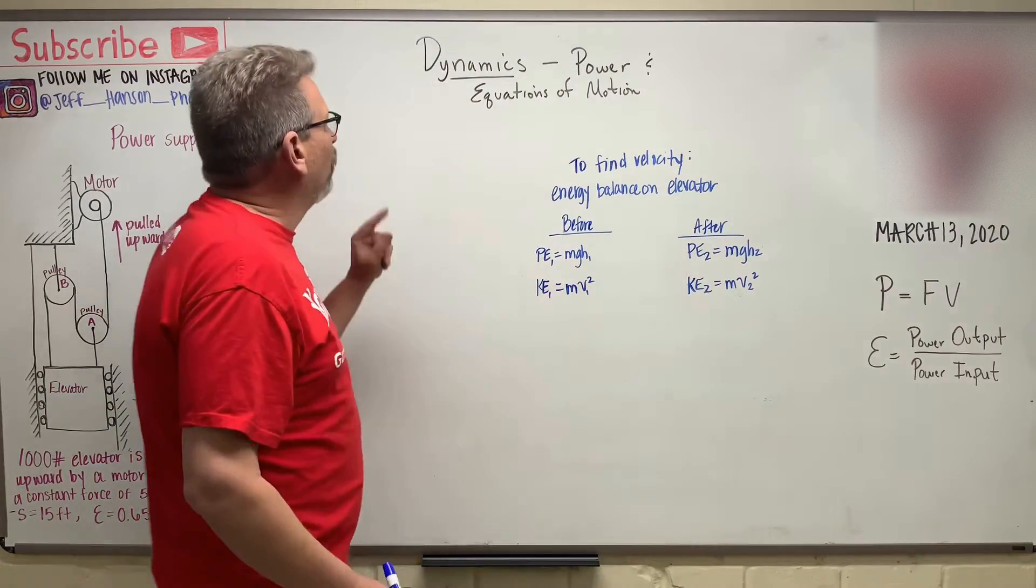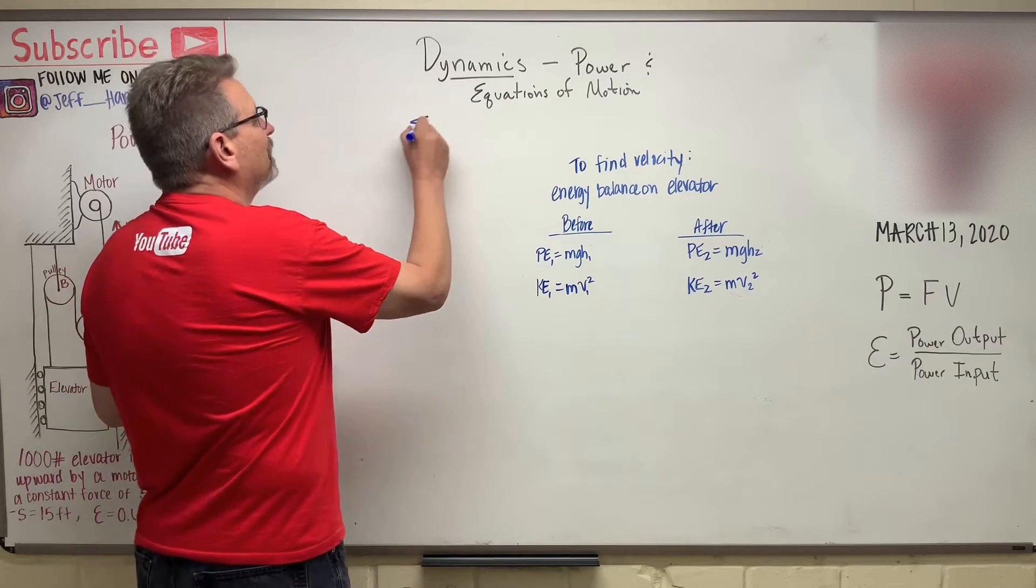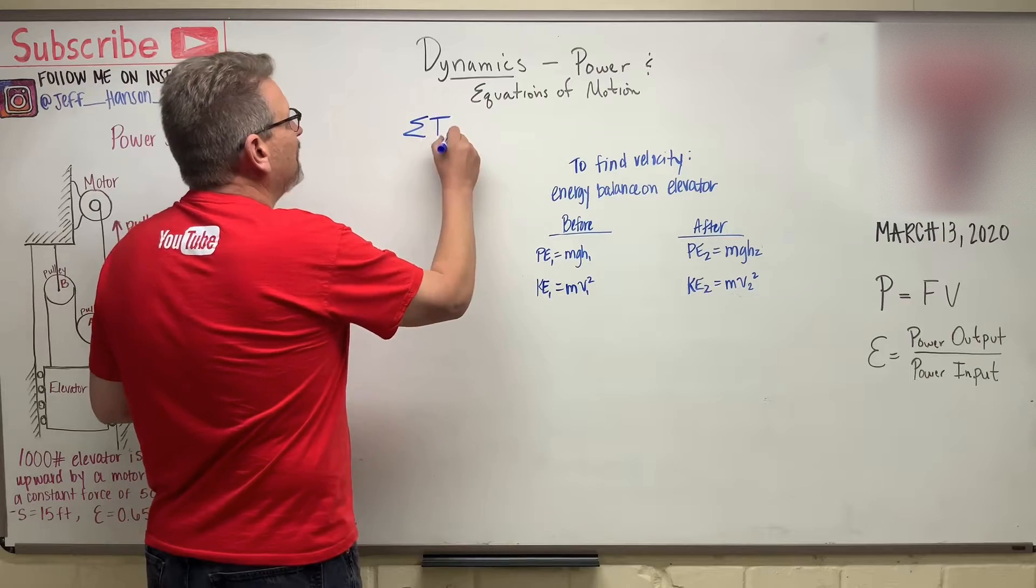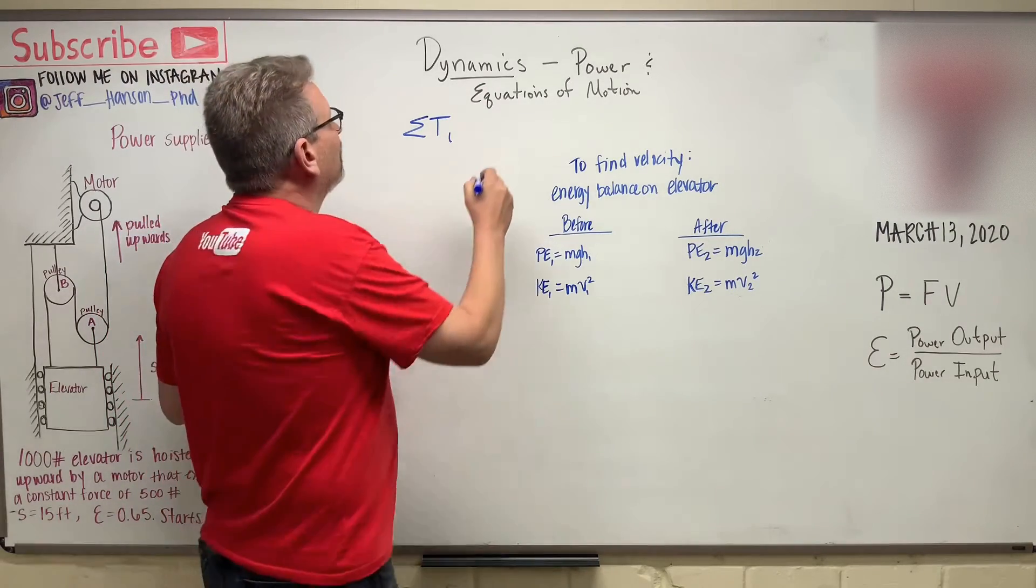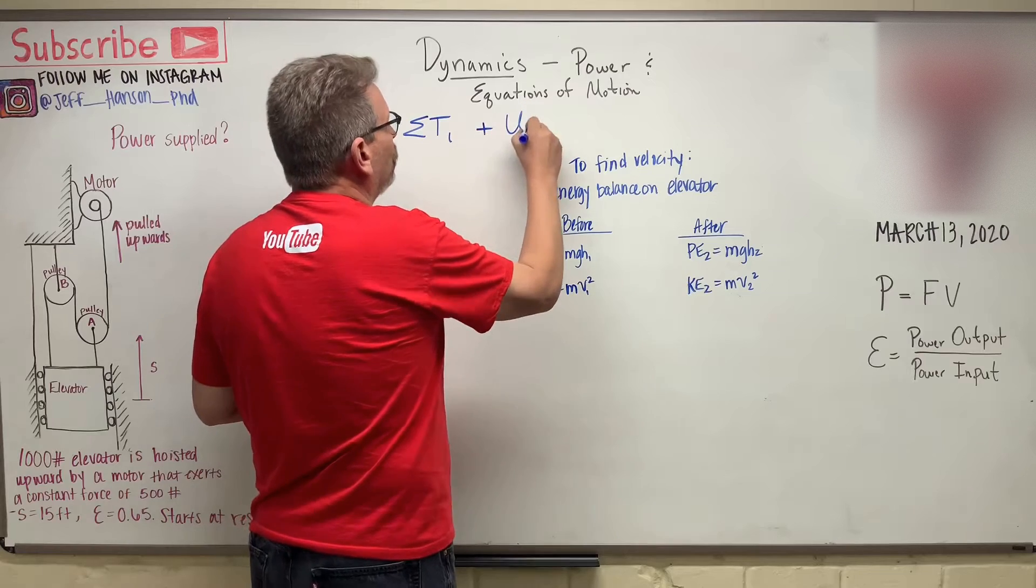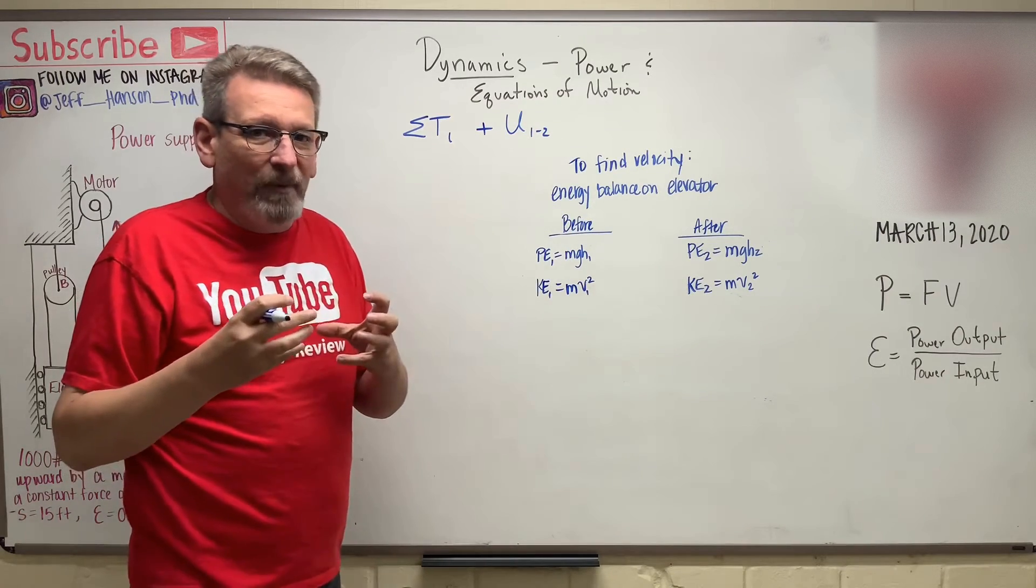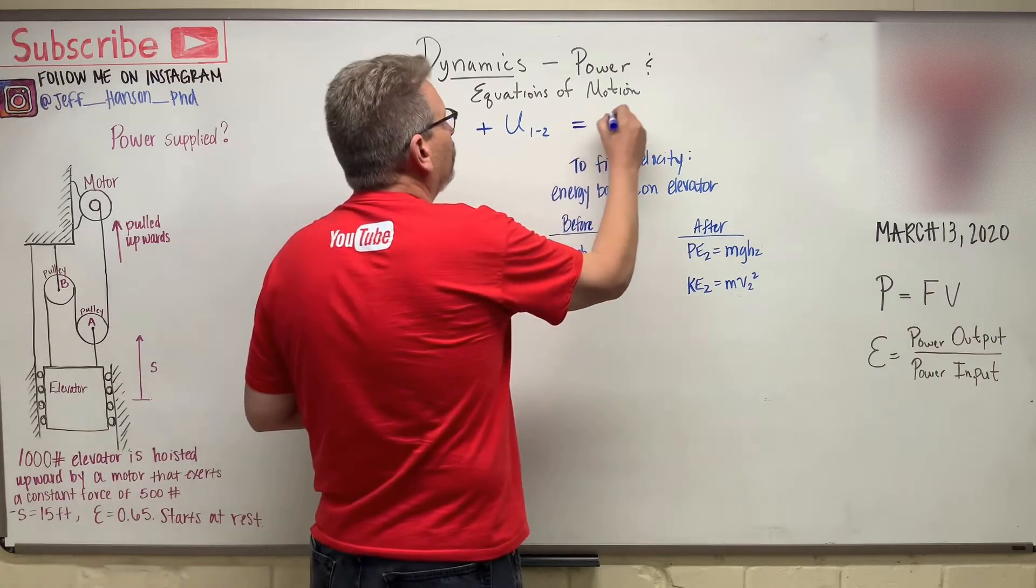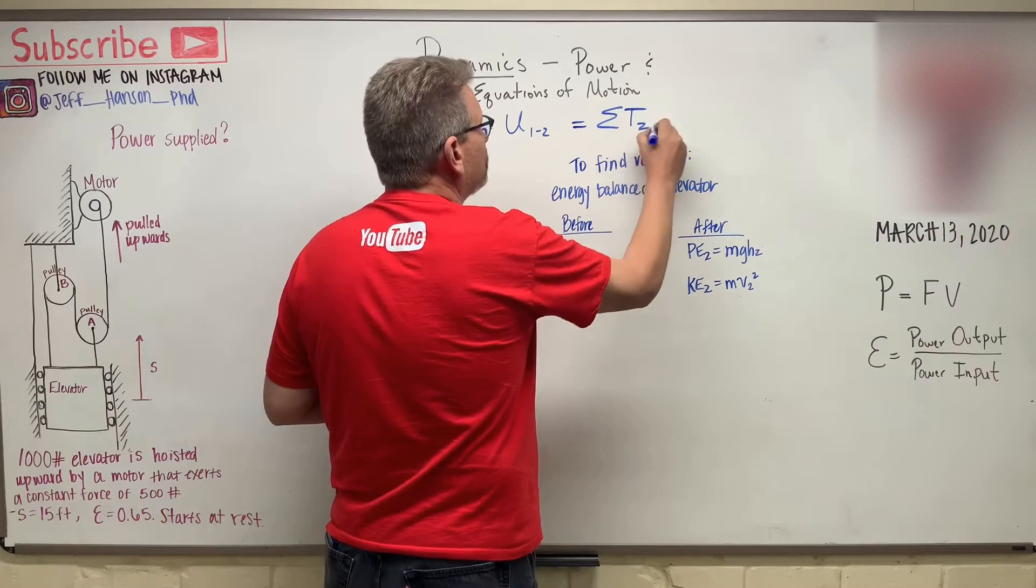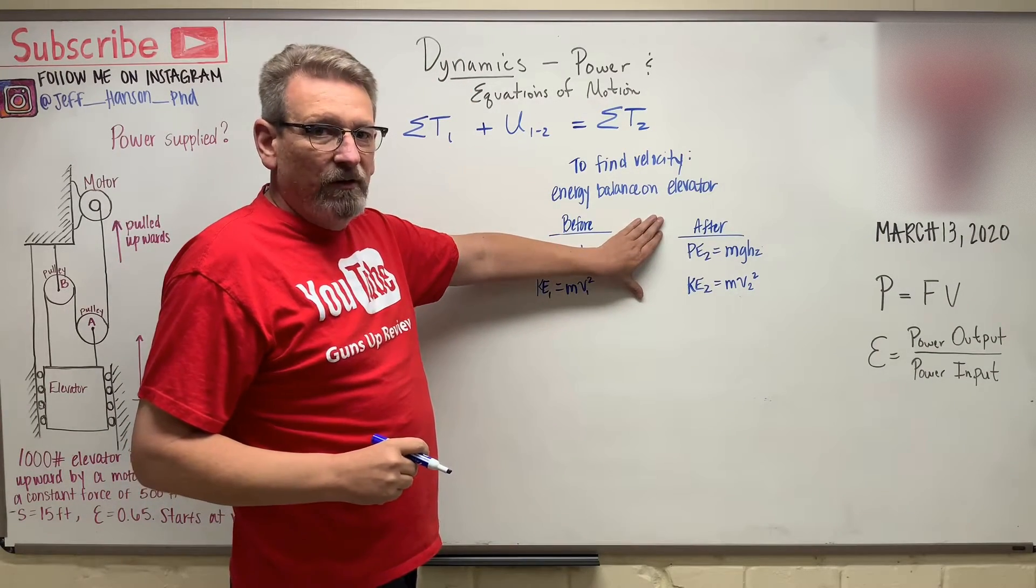So let's look at this problem. We remember from the last chapter, one of the central equations, which is the sum of the T1, the sum of the energy, the energy balance, plus U1 to 2, that work done on that body to go from position 1 to position 2 is equal to the sum of the T2s. That energy after the work has been done.